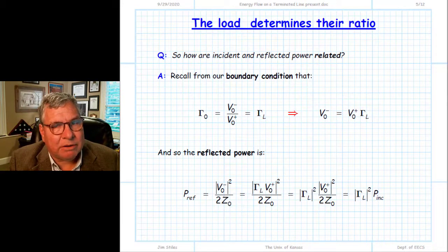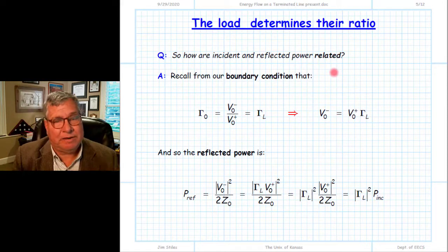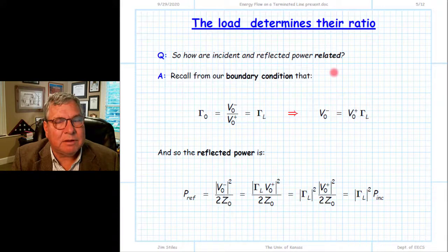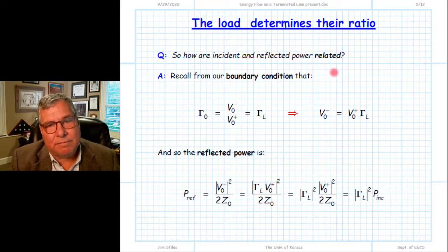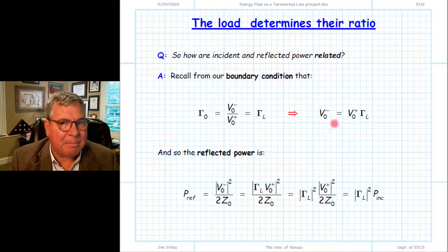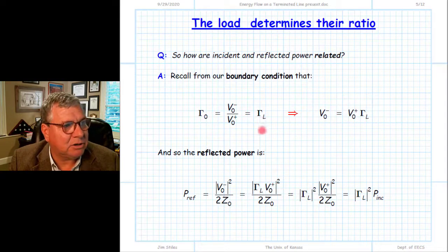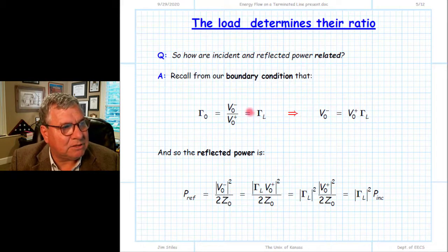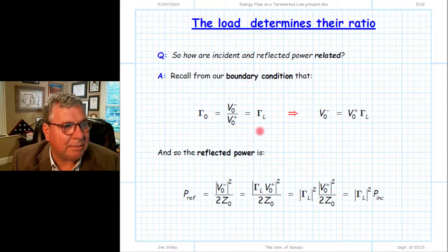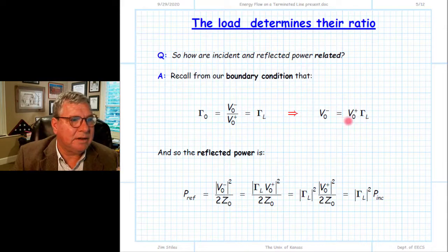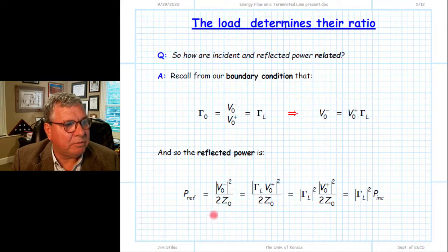How are the incident and reflected powers related to each other? Now that we have connected devices to either end, we can give a relationship between these powers. The first relationship comes from our boundary condition when we connect a load. Recall that the reflection coefficient function at z = 0 must equal the load reflection coefficient: γ(0) = γ_L. That was our boundary condition. And of course γ(0) is defined as the ratio of V₀⁻ to V₀⁺. Therefore, because of this equality from the boundary condition, we can relate V₀⁻ to V₀⁺ through γ_L: V₀⁻ = γ_L · V₀⁺.